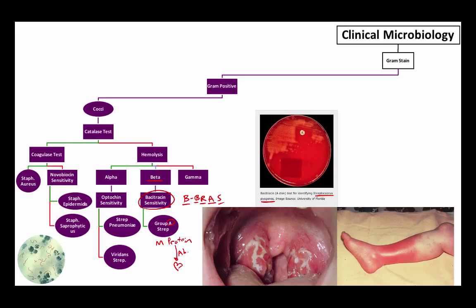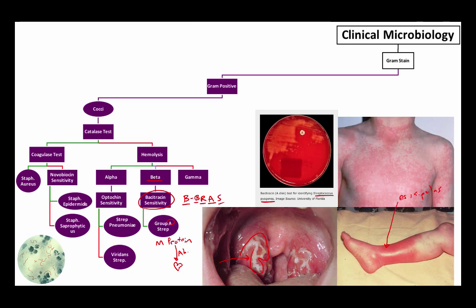For this reason, you get autoimmune destruction of those valves, which causes something called rheumatic heart disease, which is stenosis of the mitral valve and sometimes the aortic valve. There are two other infections that are a result of group A strep. The first one is strep pharyngitis. Shown here are these purulent tonsillar lymph nodes. That's pretty characteristic of it. And then also erysipelas is an infection of the skin.